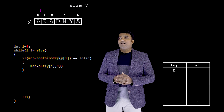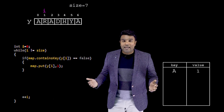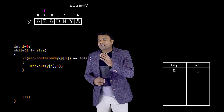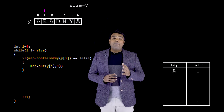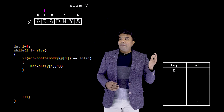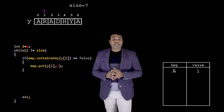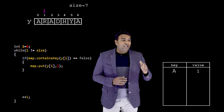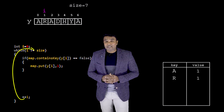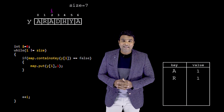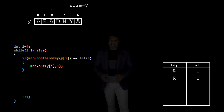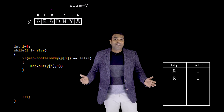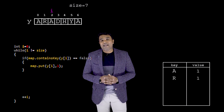After incrementing i, the next 'y[i]' is 'r'. Again, I check if the map contains the key 'r' — there is no 'r', so I get false, enter the if block, and use the put method to put the key 'r' with value '1'. After another increment, 'y[i]' happens to be 'a' again. This time when I check if the map contains key 'a', yes — the map already contains 'a', so I get true.